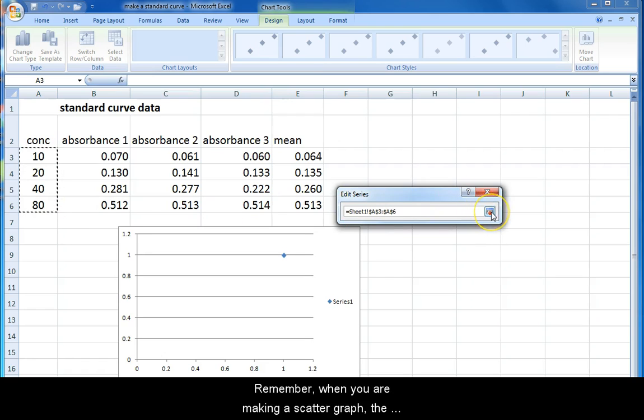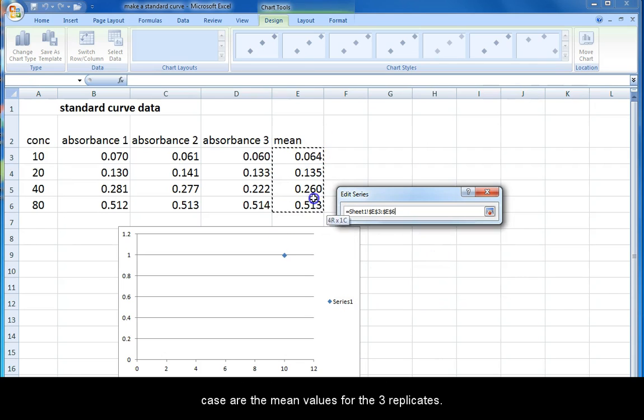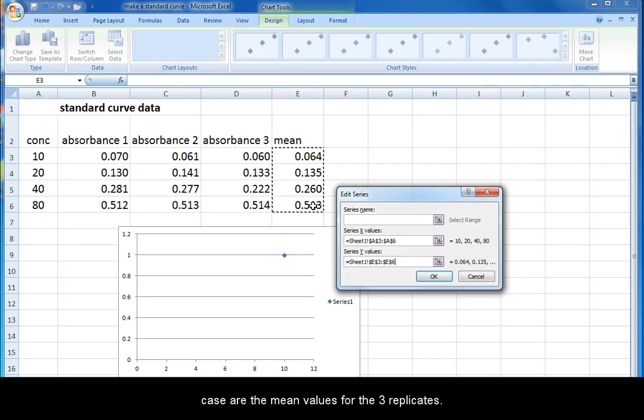Remember when you are making a scatter graph the control variable always goes on the X, which in this case is the concentrations. Once the X values are selected, hit enter or return. Now repeat this process to select the Y values, which in this case are the mean values for the three replicates.